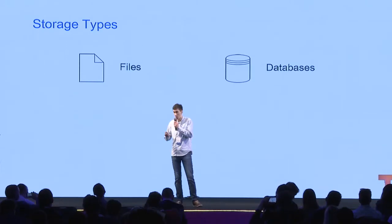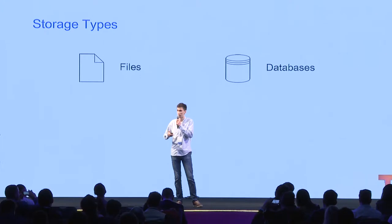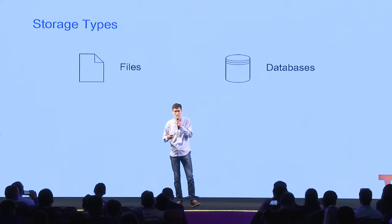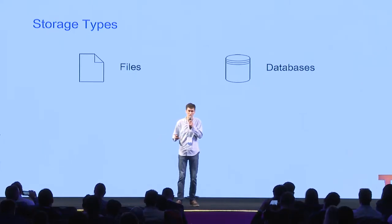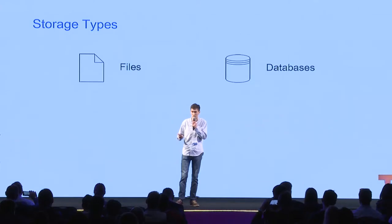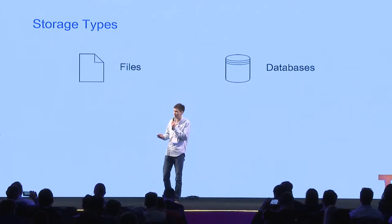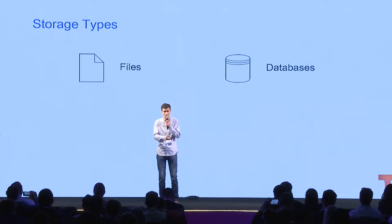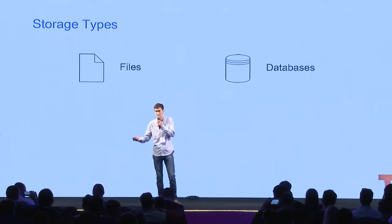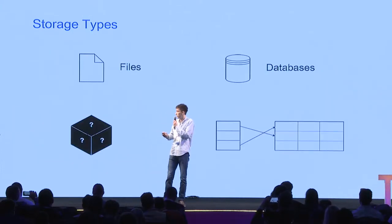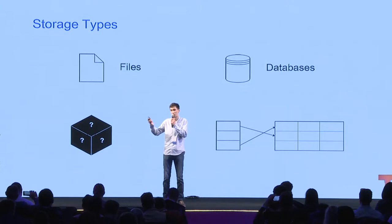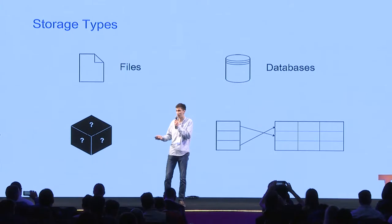All of these services use data and store it somewhere. If we try to store data in a decentralized fashion, let's first think about how it's stored in the traditional world. Roughly speaking, data is stored in two flavors: structured and unstructured. Structured data is stored in databases and unstructured in files. Databases are basically spreadsheets, while files are black boxes — you don't know what's inside until you open them.